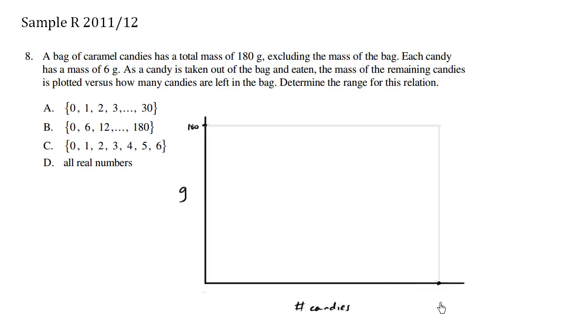So we know there's 30 candies at a maximum and 0 candies at a minimum. So when there's 30 candies, we're going to have a total of 180 grams, so definitely this point exists.